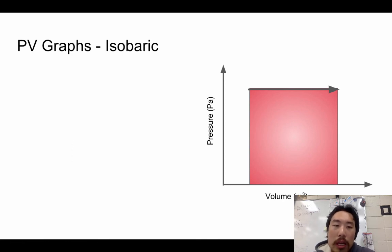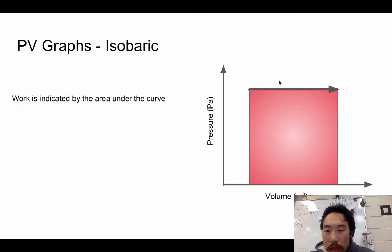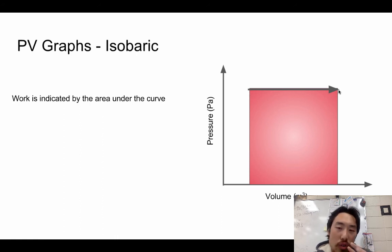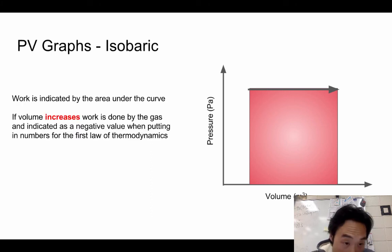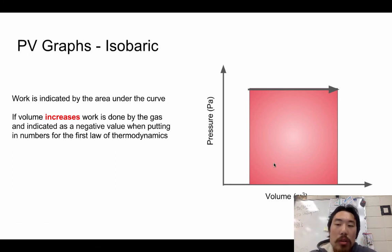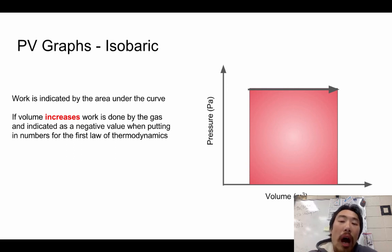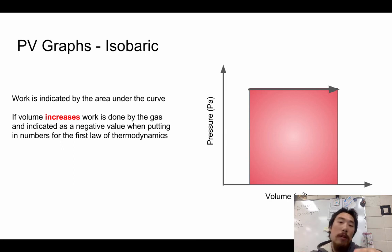Now let's go to PV graphs. The first is the isobaric curve. 'Iso' means the same and 'bar' relates to pressure, so isobaric means constant pressure. The shaded red area under the curve represents the work done by the system in an isobaric process — it is the area underneath the curve, whether that curve is a straight or curved line. If the volume increases along the PV graph, work is done by the gas, and in the first law of thermodynamics that work value is entered as negative. If the arrowhead goes left — decreasing volume — work is done to the gas, and that value is positive.